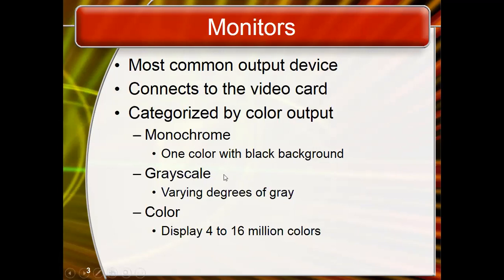A monochrome monitor is a type of CRT (cathode ray tube) computer display, which was very common in the early days of computing, especially from the 1960s through the late 1990s. The most important component was the picture tube. We were using cathode ray tube based monitors even until 2004–2006. After 2006, we changed our monitors to LCD monitors.